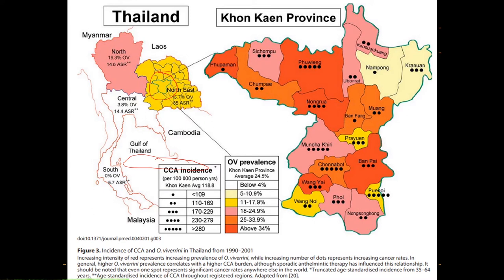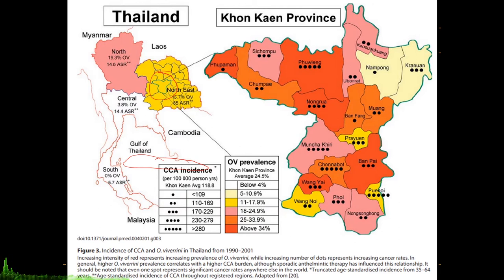This is primarily because this region is landlocked, and their primary sources of food are agricultural as well as fishing in freshwater environments, since they are quite far from the salt waters of the Gulf of Thailand and the Indian Ocean.